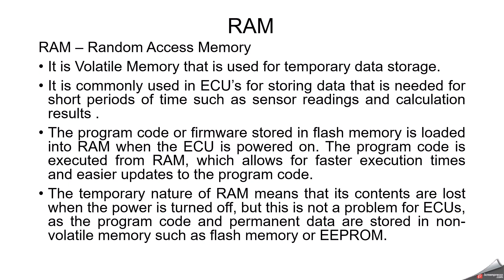RAM is used to manage the scheduling of tasks and interrupts processed by the ECU. It is also used to manage the call stack, which is a data structure used to keep track of function calls and return addresses. For data buffering, RAM is used to buffer data from external devices such as sensors and communication interfaces, allowing for smoother and more efficient data processing. The temporary nature of RAM means its contents are lost when the power is turned off, but this is not a problem because program code and permanent data are stored in non-volatile memory such as flash or EEPROM.